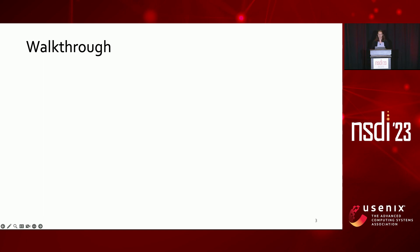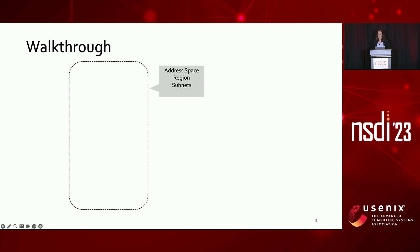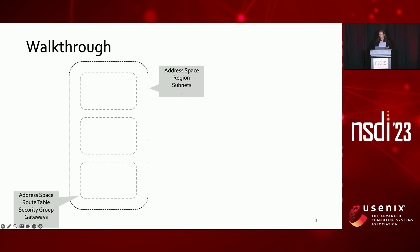First, the tenant will create a virtual network where configurations such as the address space must be specified. Notably, this address space is private, so getting connectivity out of this virtual network will require extra steps later. Within this will be potentially many subnets, all with their own configuration, as well as associated abstractions like security groups, which specify ACLs for the subnets.